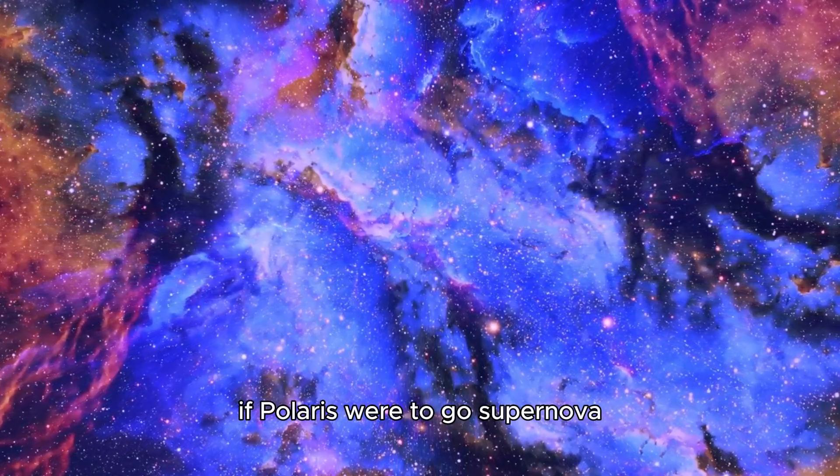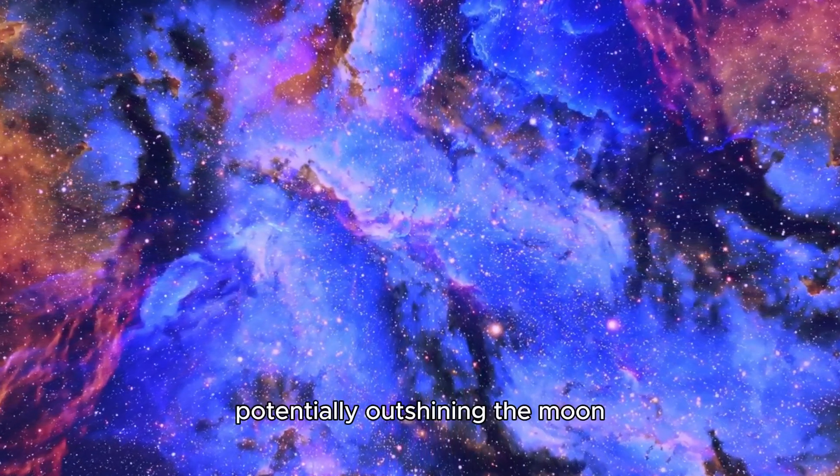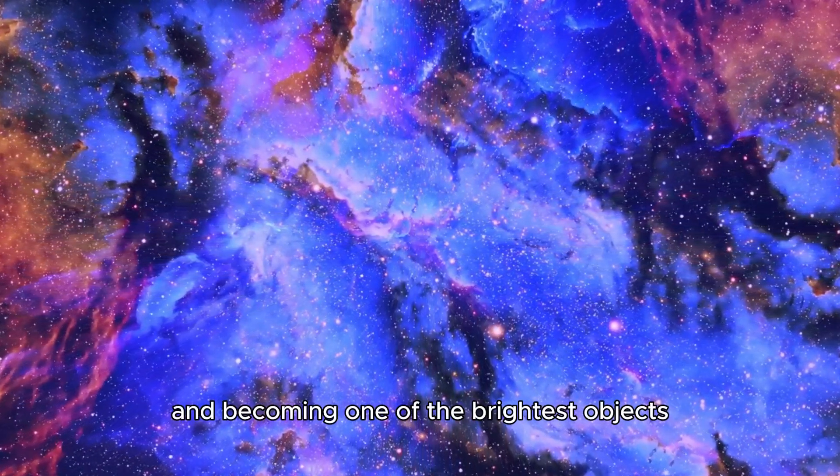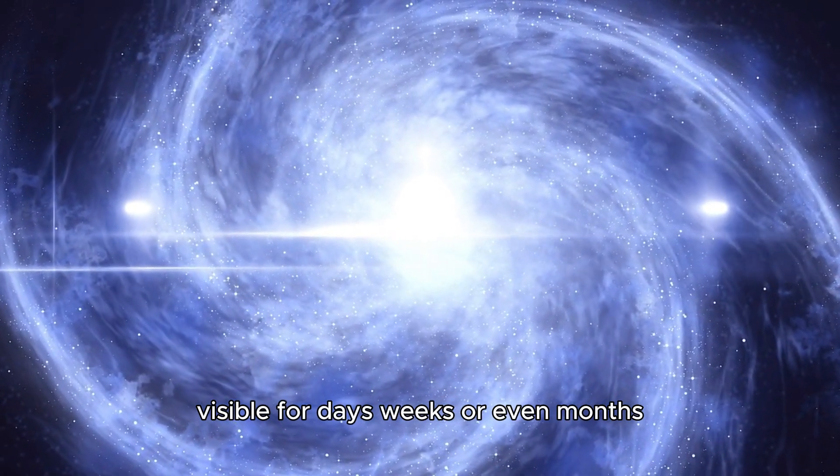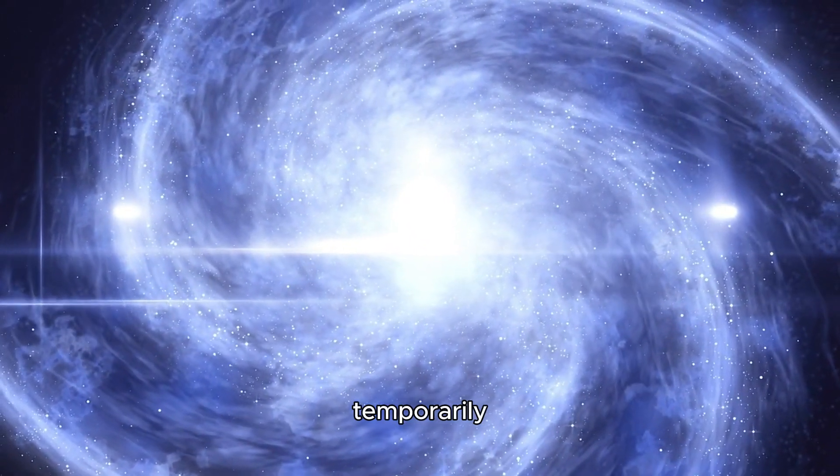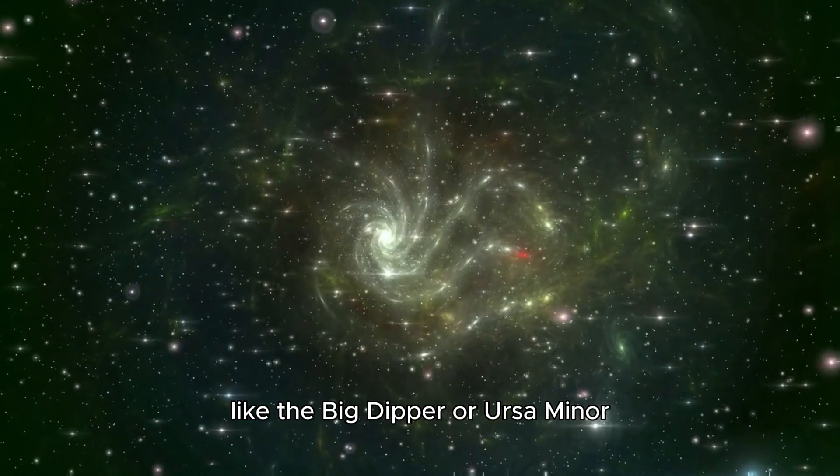If Polaris were to go supernova, it would likely be a spectacular event in our sky, potentially outshining the moon and becoming one of the brightest objects visible for days, weeks, or even months. Its appearance might drastically change, temporarily altering our perception of familiar constellations like the Big Dipper or Ursa Minor, of which Polaris is a part.